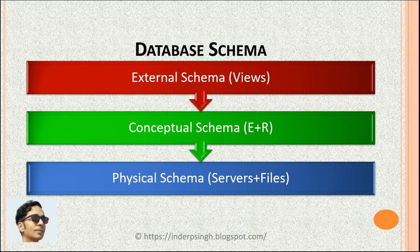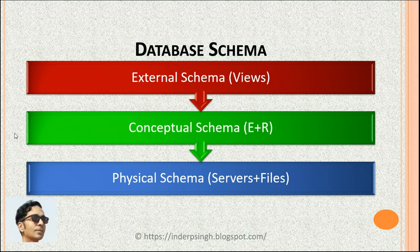When we have designed the conceptual schema, we can design multiple external schemas for different user groups. The external schema defines views for different user groups — like one external schema for marketing, another for engineering, another for accounts, and so on. The conceptual schema relies on the physical schema, which defines the physical storage and retrieval of data. The benefit of three-schema architecture is that it allows data independence, meaning changes to one schema do not affect the other schemas.